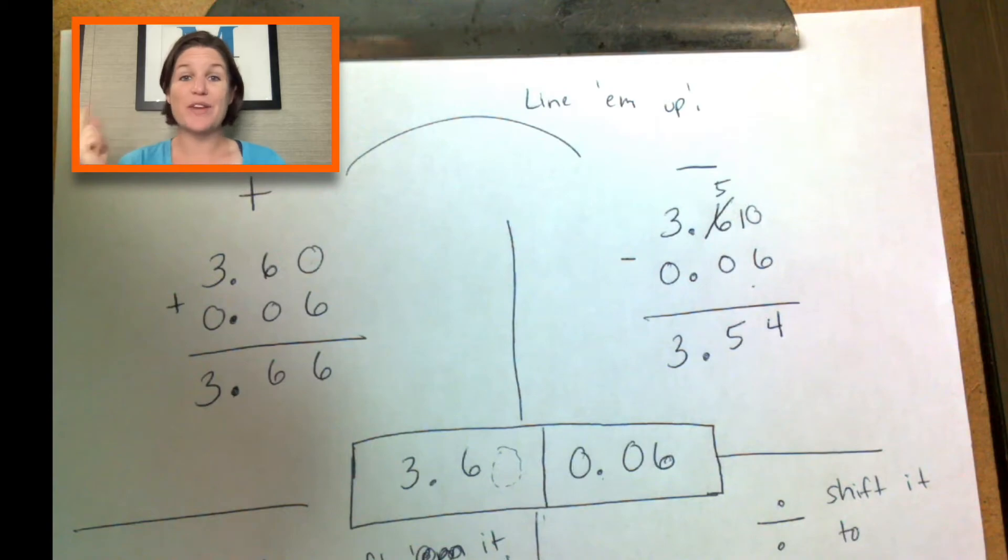So to review, when you add or subtract with decimals, you need to line them up. When you multiply with decimals, you forget about them and shift them at the end. When you divide with decimals, you shift them to begin. Just the divisor. Make sure the divisor is a whole number.